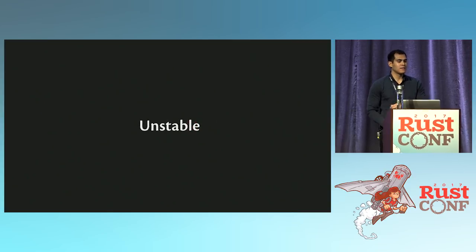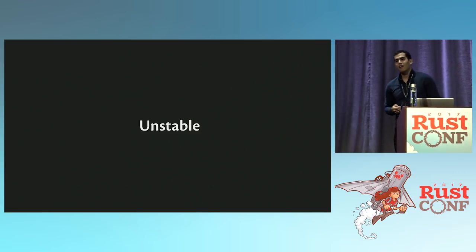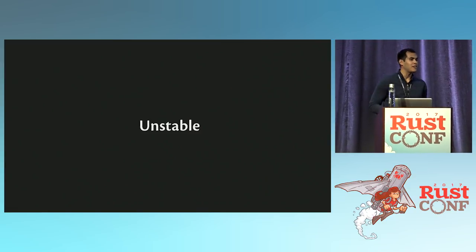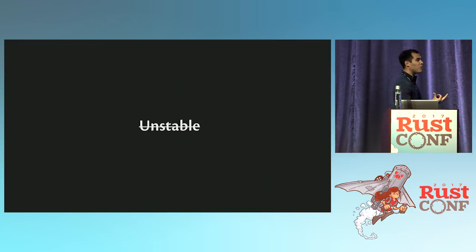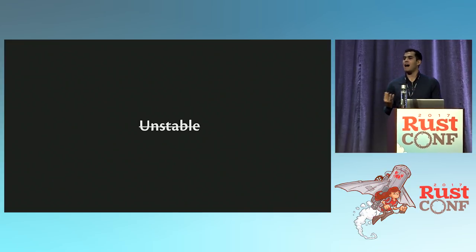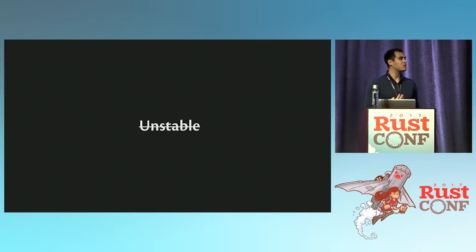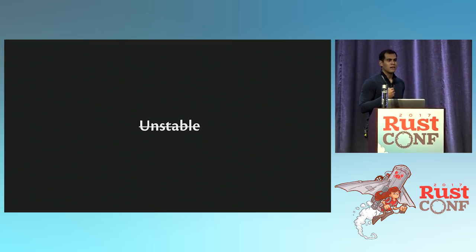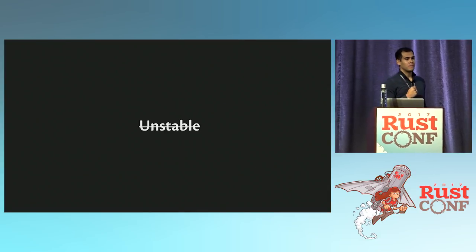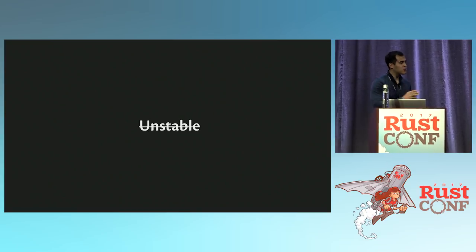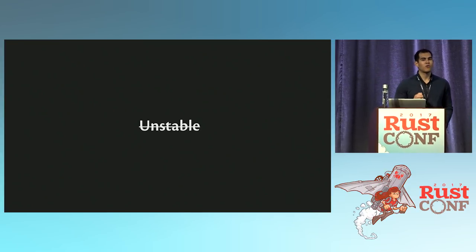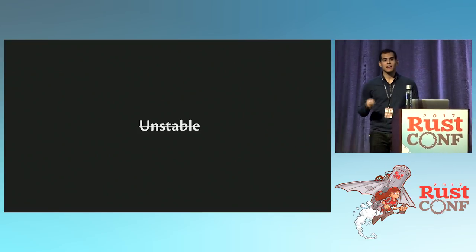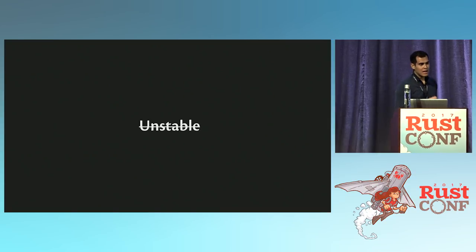The next myth is that Rocket is somehow unstable. If you've used Rocket, you might think of course it isn't stable — it's using nightly. Rocket uses a lot of nightly features, but I'm here to tell you Rocket is stable in the semver sense. If you use Rocket 0.3, Rocket 0.3.1 will not break your application. Just because Rocket uses nightly doesn't mean your Rocket application itself is unstable. At most, in the history of Rocket, there have been 24 hours between a new nightly breaking something in Rocket and a new release fixing itself. So at worst, if you update every single day, you wait 24 hours for a brand new release.